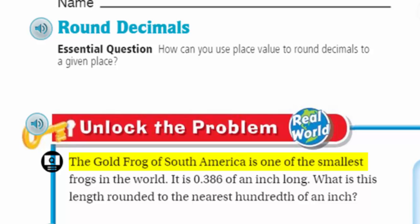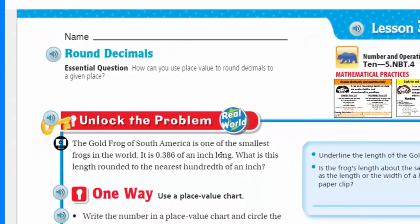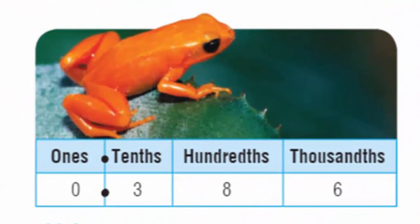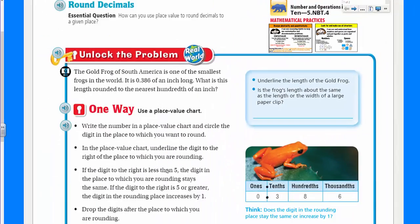Let's unlock the problem - it's a real world problem! It says the gold frog of South America is one of the smallest frogs in the world. It is 386 thousandths of an inch long. What is this length rounded to the nearest hundredth of an inch? There he is - I've heard of the golden frog of South America, the poisonous dart frog. He is one cool dude.